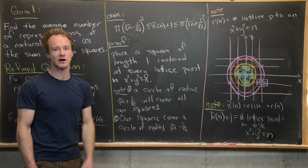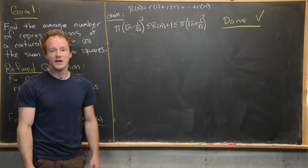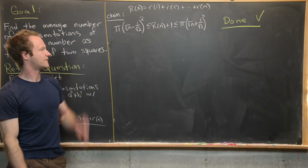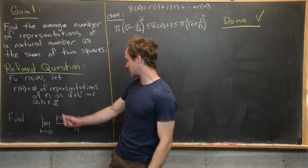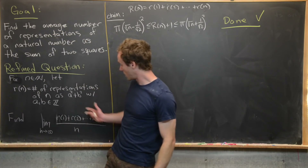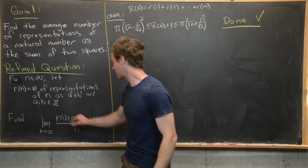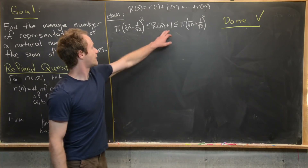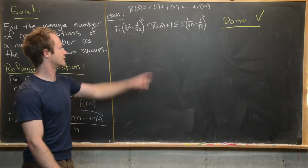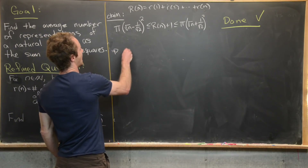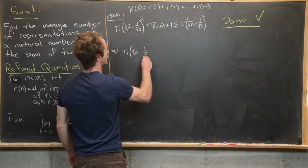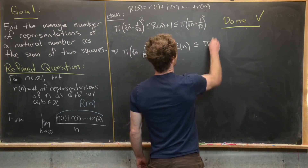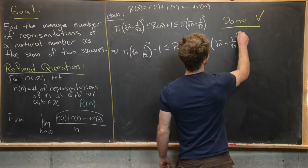Now it's essentially a calculus problem to finish. We have the inequality π(√n − 1/√2)² ≤ R(n) + 1 ≤ π(√n + 1/√2)². We need to isolate capital R(n), so we subtract 1 from all parts: π(√n − 1/√2)² − 1 ≤ R(n) ≤ π(√n + 1/√2)² − 1.